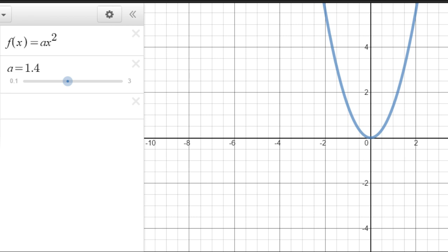Now a also tells you how wide the parabola opens up. The higher a gets, the narrower the parabola is. And then when a is a number between zero and one, it gets really wide. There's point one and look how wide that parabola is.